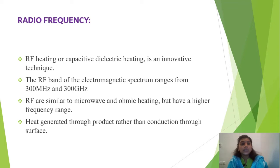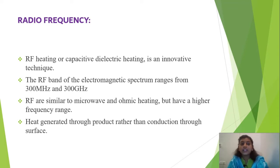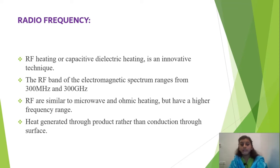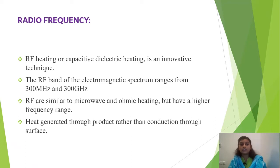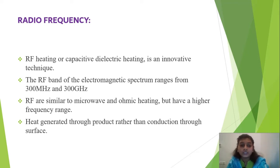The range for the RF band is 300 megahertz to 300 gigahertz. RF is similar to microwave and ohmic heating but has a very high frequency range. The processes are similar — if you see microwave and ohmic heating, there will be dielectric heating, meaning heating from the molecular level outward. The processes are all the same, but RF has a higher frequency range.